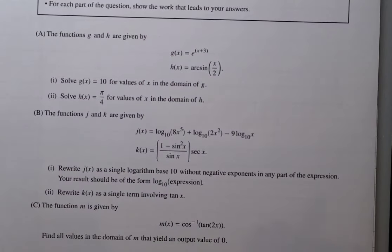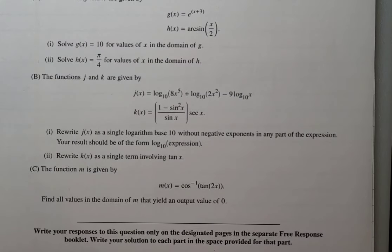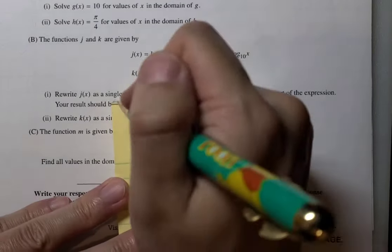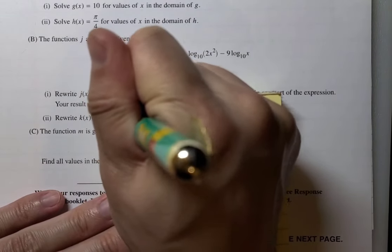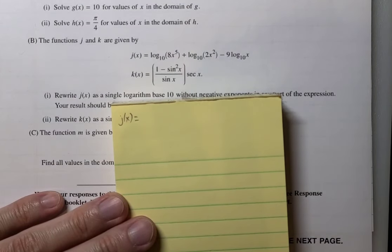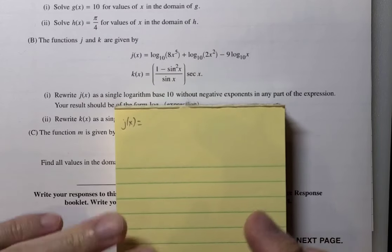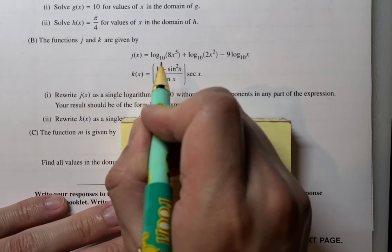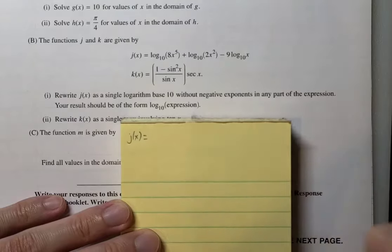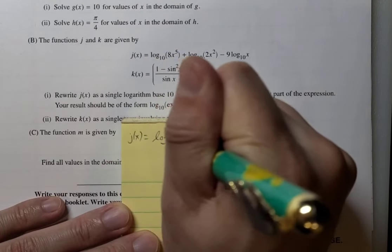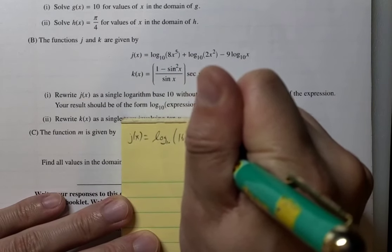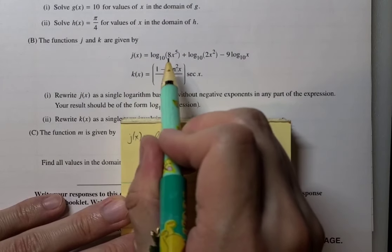Next. Functions j and k are given by these. You write j as a single log without negative exponents. This is a very typical question. I feel like I've done this many times on the channel also. So, this is nothing new if you've seen other videos on the channel. So j of x, I'm not going to rewrite the original problem. I'm going to write it as 1 log without negative exponents. So it should be log base 10 of expression. So when we have log a plus log b, you multiply the two arguments. So it'll be log base 10 of, we multiply the 2, that would be 16x to the 7th.